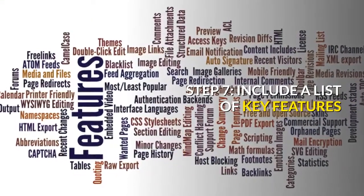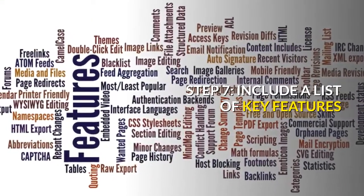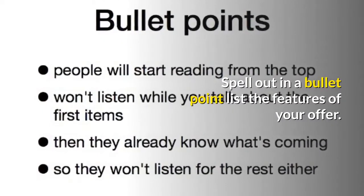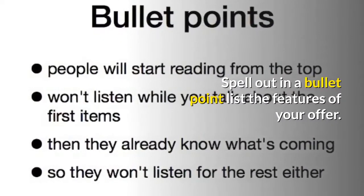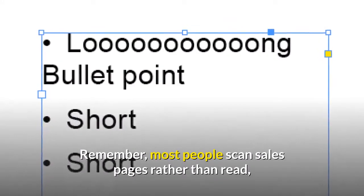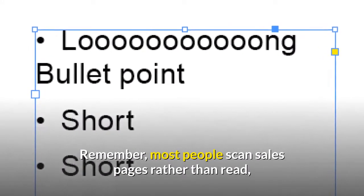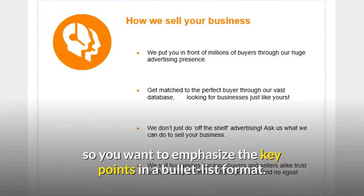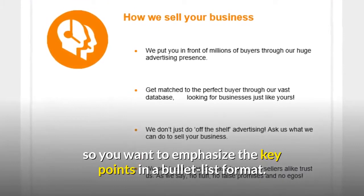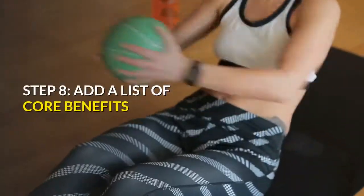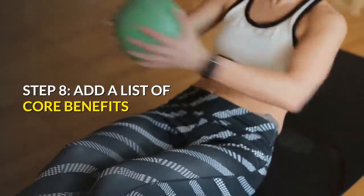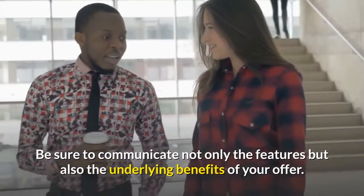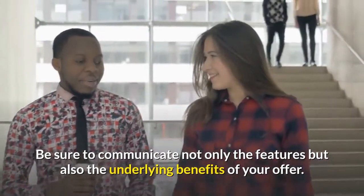Step seven: include a list of key features. Spell out in a bullet-point list the features of your offer. Remember, most people scan sales pages rather than read them, so you want to emphasize the key points in a bullet list format. Step eight: add a list of core benefits. Be sure to communicate not only the features but also the underlying benefits of your offer.